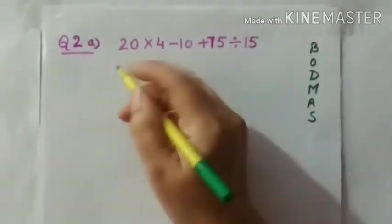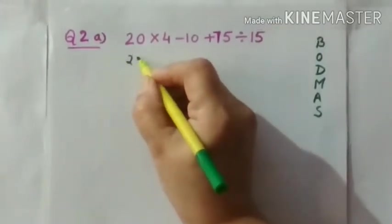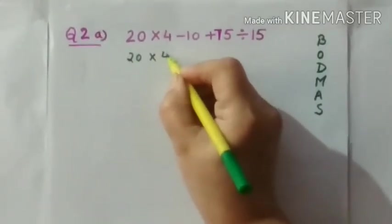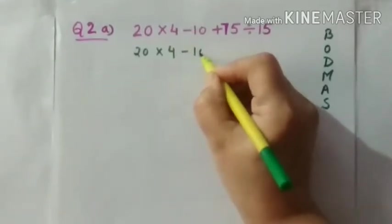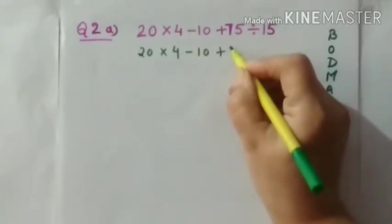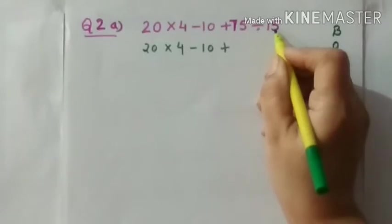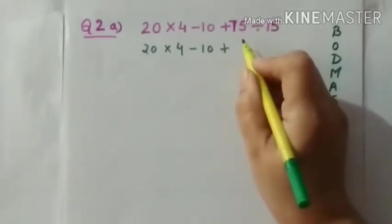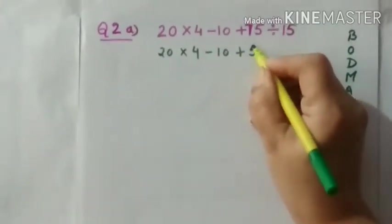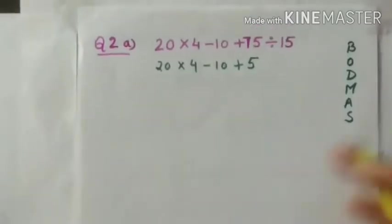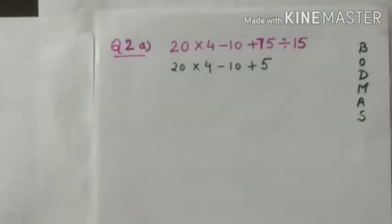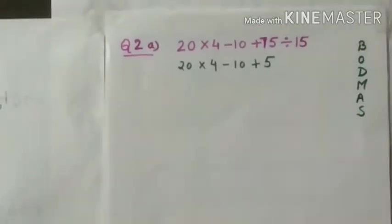So start solving this. Which we don't solve, we will copy first. Means 20 multiplied by 4 minus 10 plus 75 divided by 15. So 15 times 5 is 75. So I have written directly here 5. As I have divided 75 by 15, answer is 5.